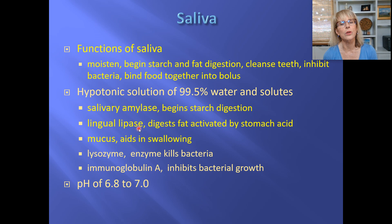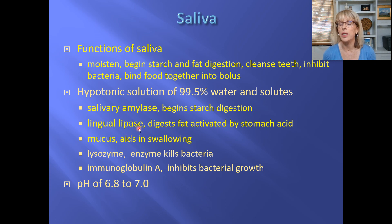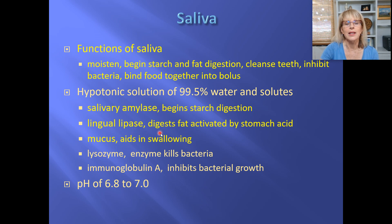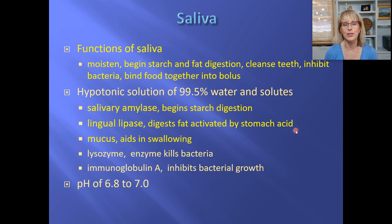Lingual lipase is made by your lingual glands, but it is not active while you're chewing. So it's true to say that the chemical digestion of carbohydrates starts in the mouth, but the chemical digestion of triglycerides and proteins won't start until the stomach. Lingual lipase gets flipped into its 'on' position by the acid in the stomach, and then it will start to digest fats.